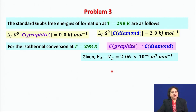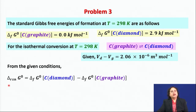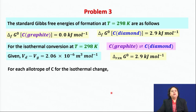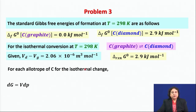From the given data, the standard Gibbs free energy of reaction is ΔG°f(diamond) − ΔG°f(graphite) = +2.9 kJ/mol. For the isothermal change, dG = V dP. Integrating both sides, the Gibbs free energy of the i-th allotrope at pressure p is: Gᵢ(p) = Gᵢ° + ∫(p° to p) Vᵢ dp.